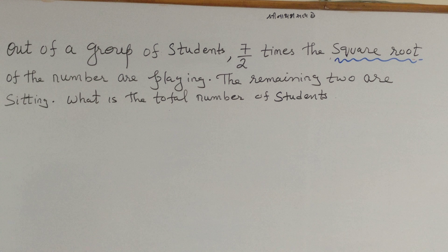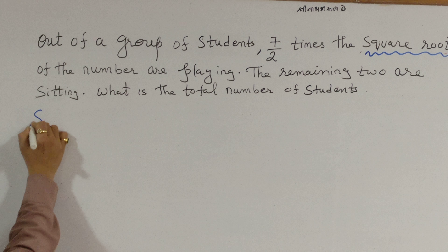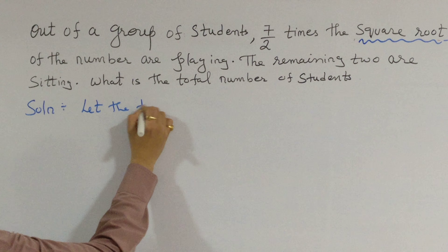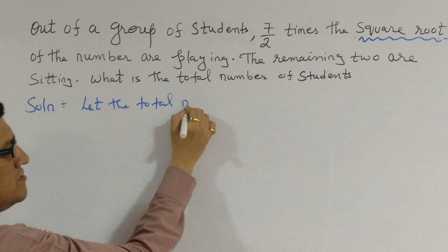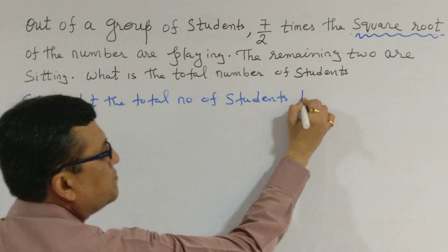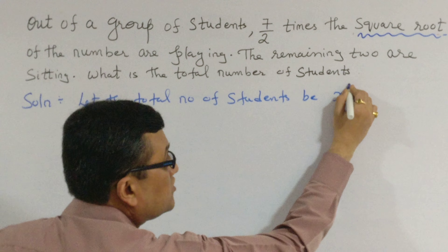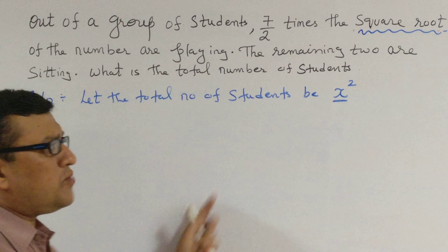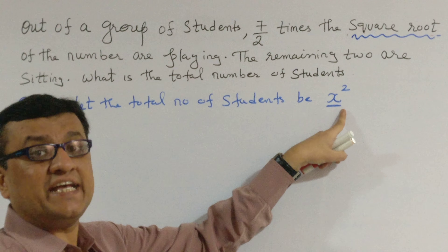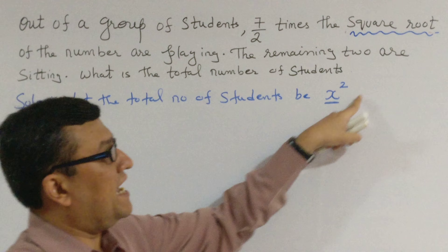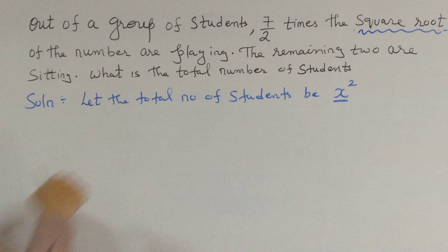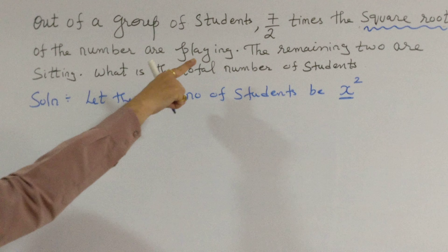So what we do is start our sum as: let the total number of students be x². Normally we have 'let the total number of students be x,' but here we take x². Why? It is only because of the word 'square root' — we'll see further.